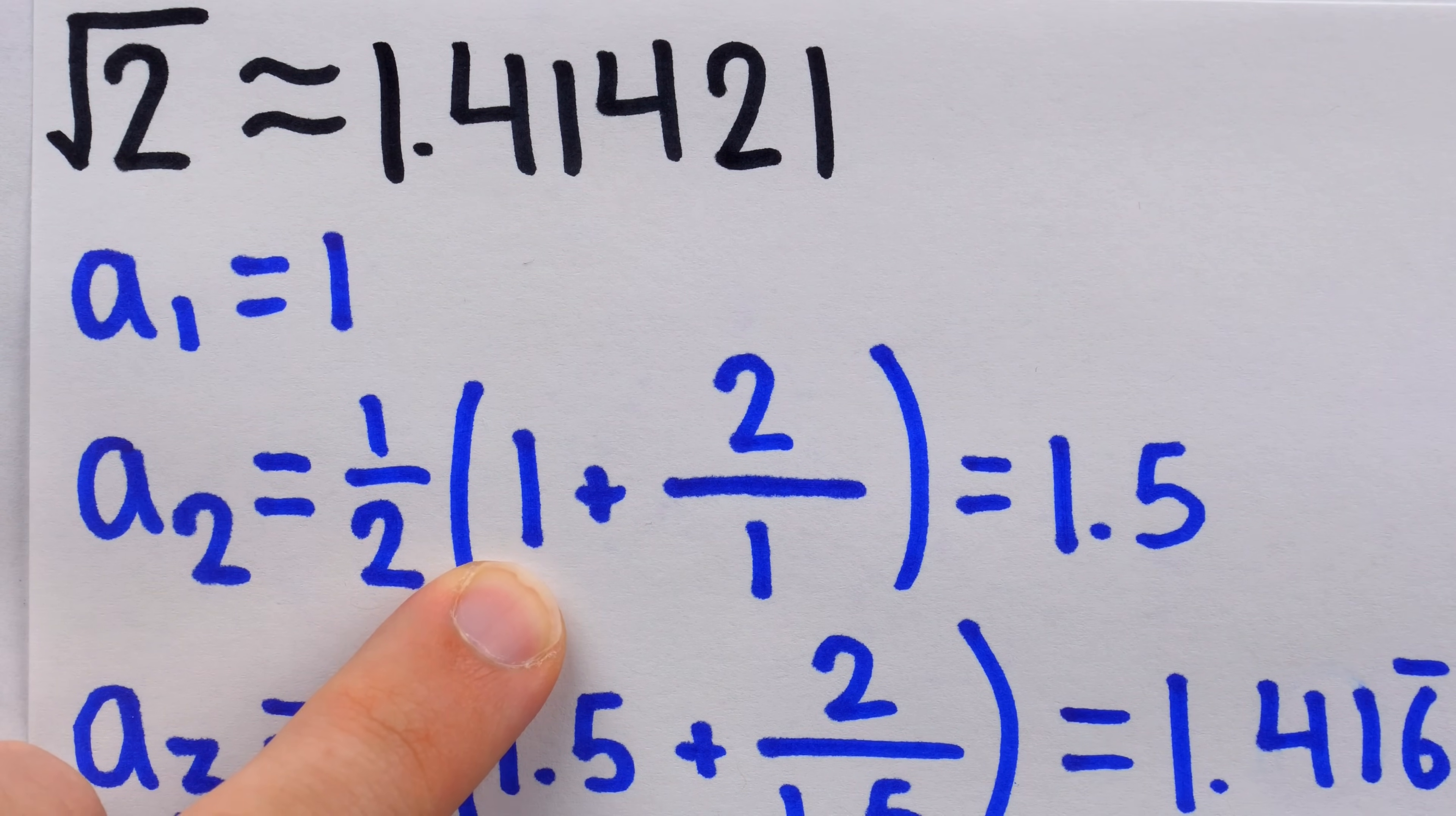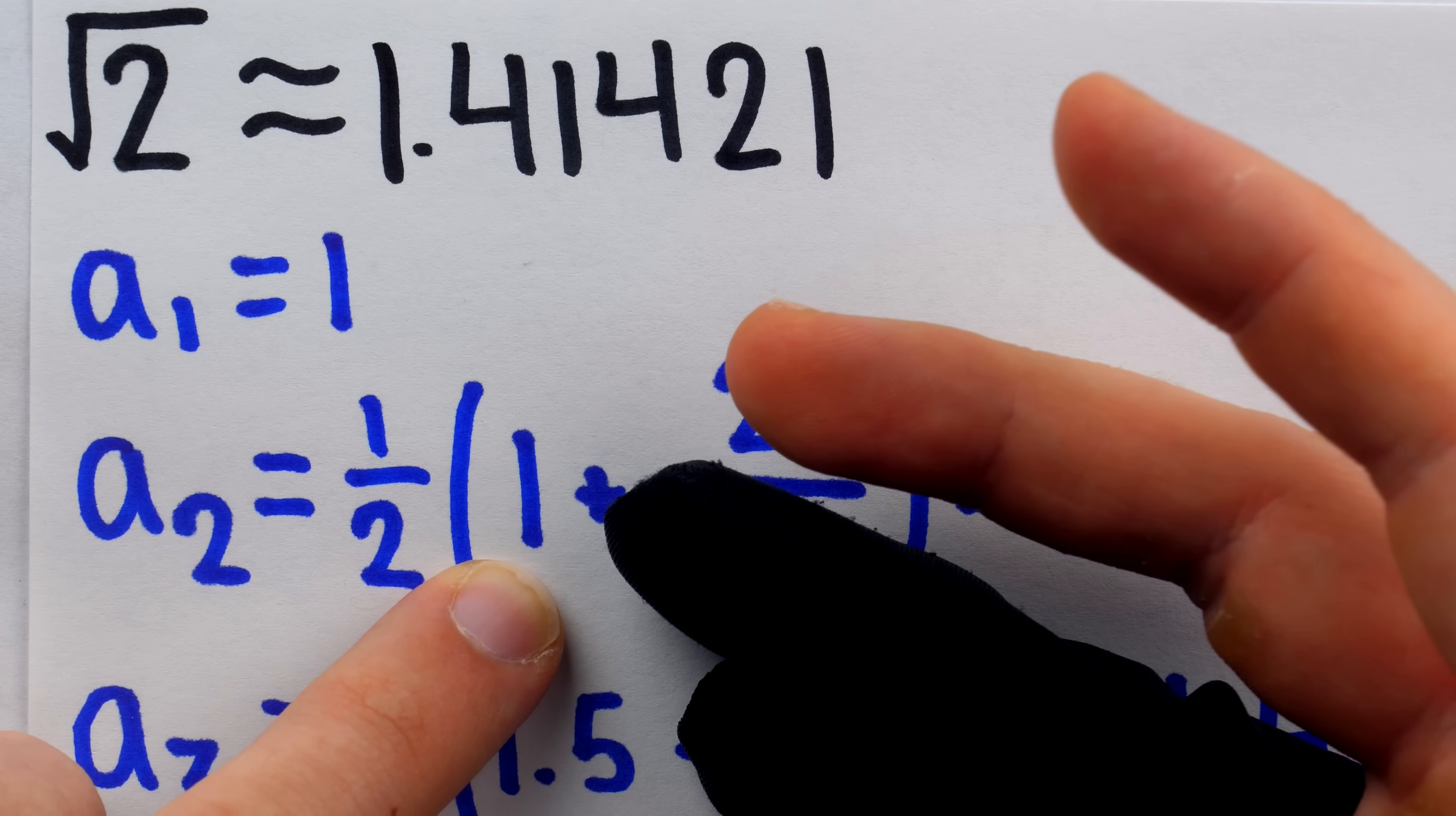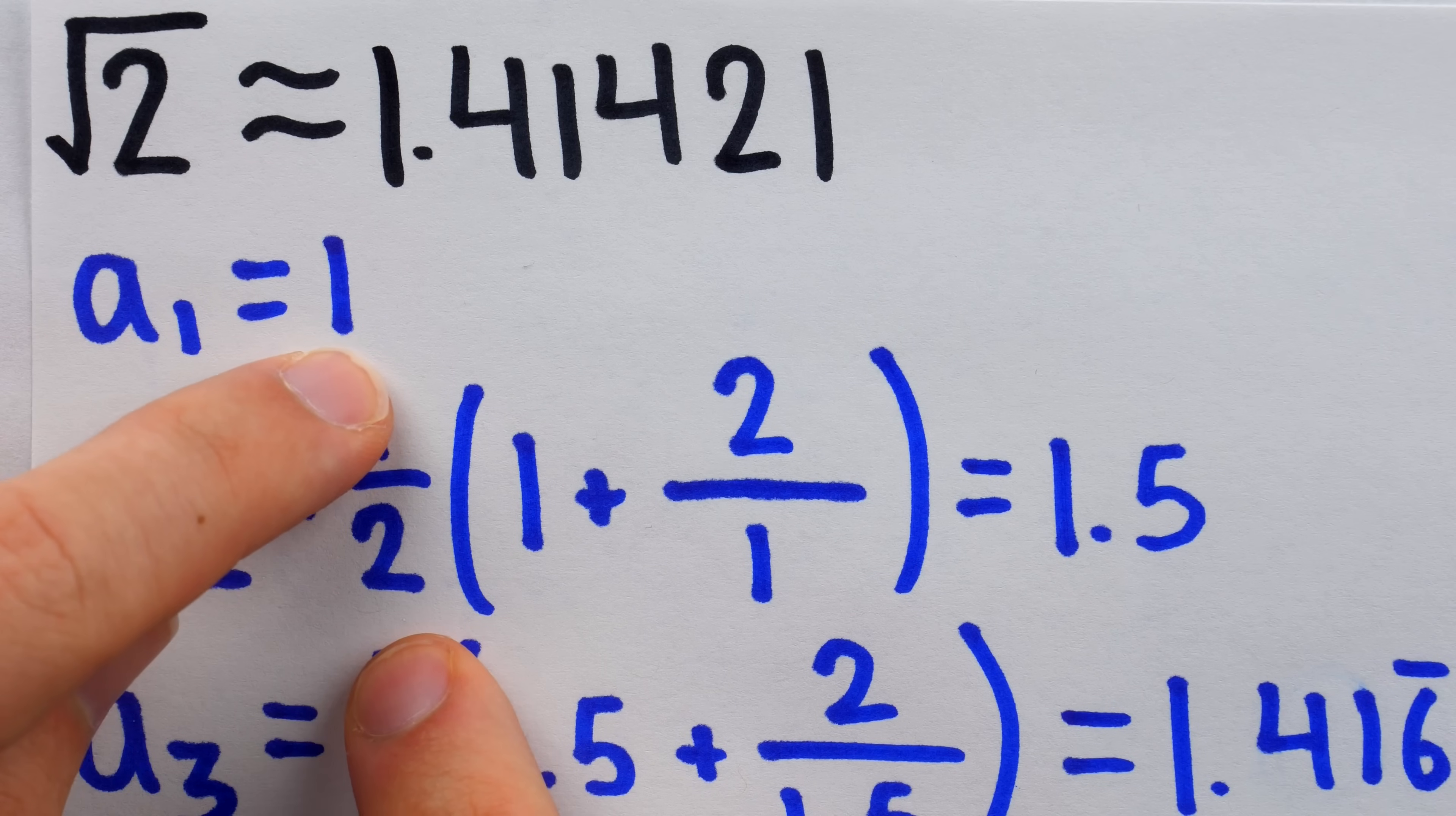Whenever this is the case, 2 divided by that underestimate is going to be an overestimate. So, we take an underestimate for root 2, an overestimate, and then we find their average.